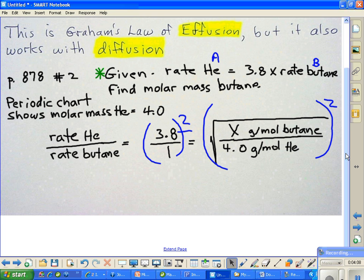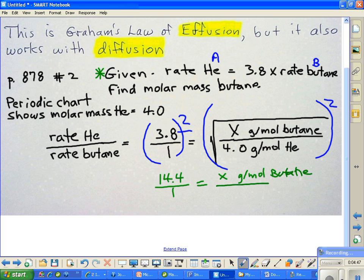We can square that easily with our calculator. When we do that, the calculator is going to show us 3.8 times 3.8, and that's going to give us 14.4. So we're going to have 14.4 over 1 squared, which is 1, equal to x grams per mole of butane, and on the bottom we have 4.0 grams per mole of helium.